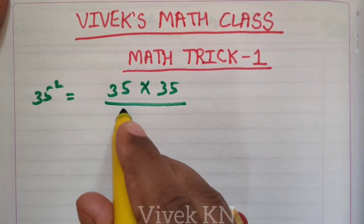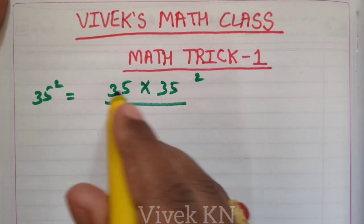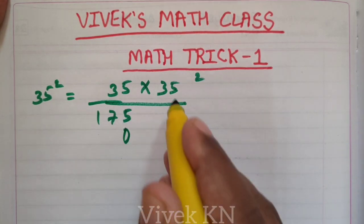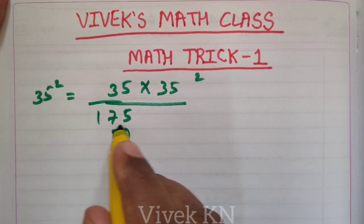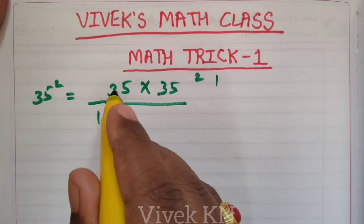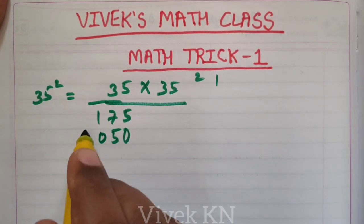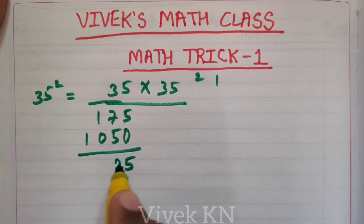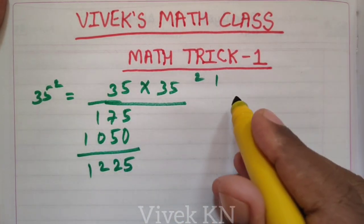5 times 5 is 25, 5 to carry. 5 times 3 is 15 plus 2, 17. Next, 0. 3 times 5 is 15, 5 to carry. 3 times 3 is 9 plus 1, 10. Adding these two, we get 1, 2, 2, 5 as the answer.